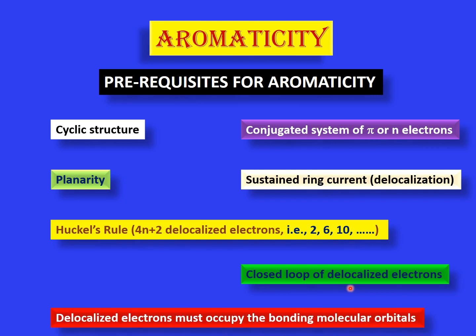Finally, all the delocalized electrons must be occupied in the bonding molecular orbitals of that molecule. You can find a link to a video on molecular orbitals here. There are different types of molecular orbitals — bonding, anti-bonding, or non-bonding. In the case of aromatic molecules, all the delocalized electrons will occupy the bonding molecular orbitals only, meaning there will be no electrons in the non-bonding or anti-bonding molecular orbitals.